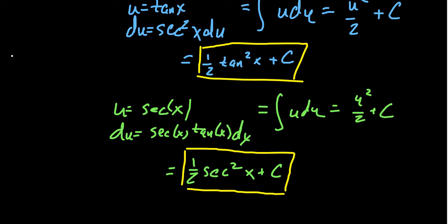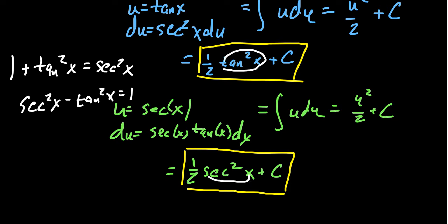Notice that if I take 1 plus tangent squared x, this is equal to secant squared of x. Or more importantly, if you rewrite it, secant squared minus tangent squared is equal to 1. And so these two, because that's what's different between these two anti-derivatives, you have a tangent squared versus a secant squared. So notice by this Pythagorean identity, tangent squared and secant squared only differ by a constant.